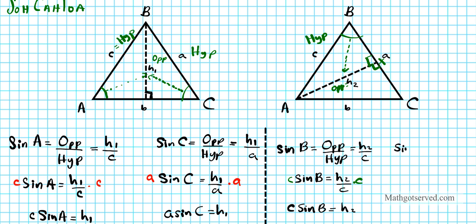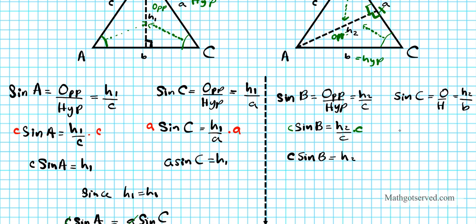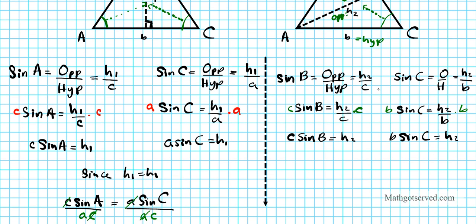Now looking at the right side of h2 in triangle AXC, with angle C as the reference angle, h2 is the opposite side and b is the hypotenuse since it's opposite the 90-degree angle. So sine C equals h2 over b. Multiplying both sides by b gives b·sin C = h2. Notice we're doing exactly what we did in the first case but with the pair of letters B and C.